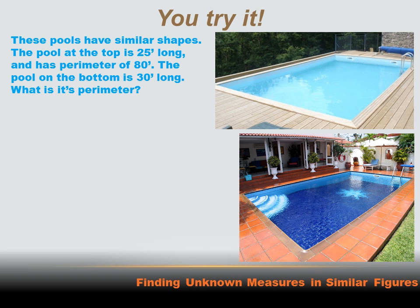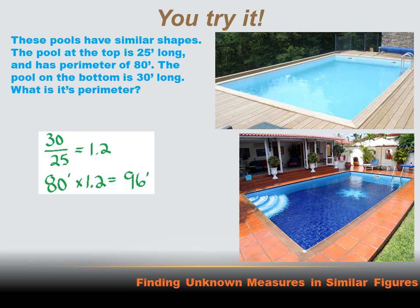Don't forget to hit the pause button. This problem has the same basic information, but instead of the width of the pool, we want to find the perimeter of the pool. We know the ratio of growth is 1.2 — the length increased from 25 feet to 30 feet. So if we multiply that ratio of 1.2 times the perimeter of the top pool, we'll get the perimeter of the bottom pool: 96 feet.